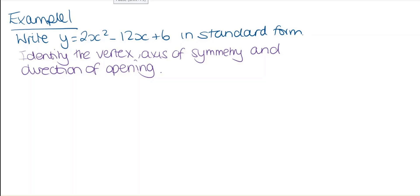Example 1: we're asked to write y = 2x² - 12x + 6 in standard form. We're asked to identify the vertex, the axis of symmetry, and the direction of the opening of the parabola.